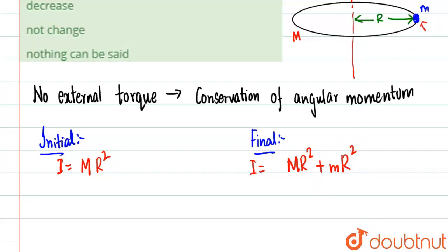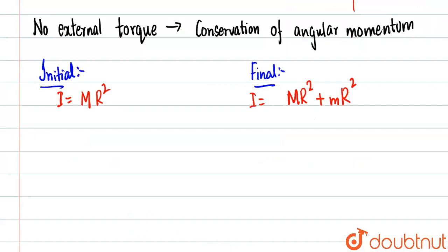Now what we are going to do: we are going to use the fact that you can easily see I_initial is less than I_final because there is this quantity being added.